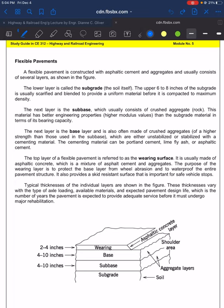The next layer is the base layer, also often made of crushed aggregates of higher strength than those used in the subbase. The difference between the base layer and subbase is that the base has higher strength aggregates, which can be either unstabilized or stabilized with a cementing material. The cementing material used to bind the aggregates could be Portland cement, lime fly ash, or asphaltic cement.